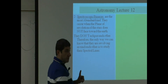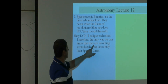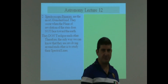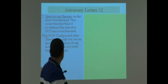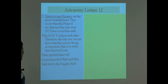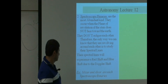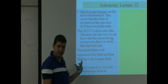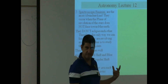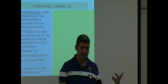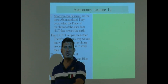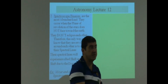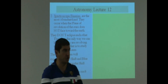The only way we can know that they are revolving is to study their spectral lines. We study the spectral lines of these binaries, and something known as Doppler redshift and Doppler blueshift will take place. The spectral lines will experience a redshift and blueshift due to the Doppler shift. For example, Mizar and Alcor are also an example of spectroscopic binaries. Just because a binary is visual doesn't mean it can't also be spectroscopic — you can visually see them and also study their spectra experiencing blueshift and redshift alternately.